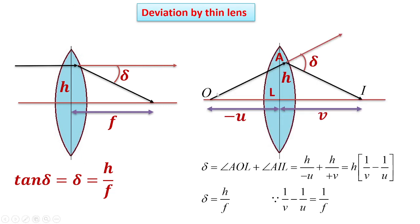Suppose there is an object on the left-hand side of the lens. OL equals U; as per sign convention it is minus U, and LI is plus V. The deviation produced by the lens on the incident ray is angle AOL plus angle AIL, which equals H/(−U) plus H/(+V), which equals H times (1/V − 1/U). Since 1/V minus 1/U equals 1/F, we get delta equals H/F.